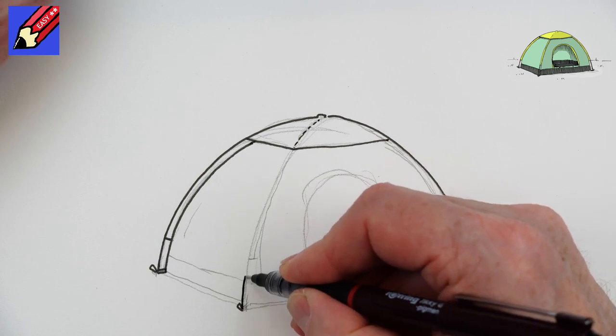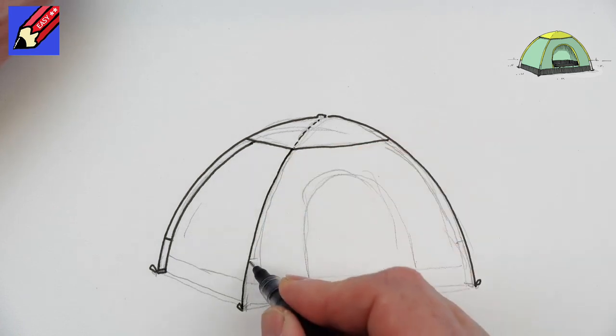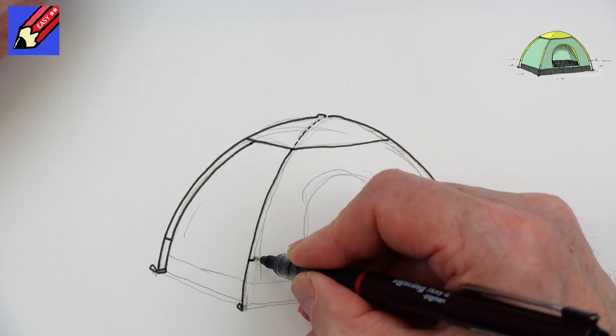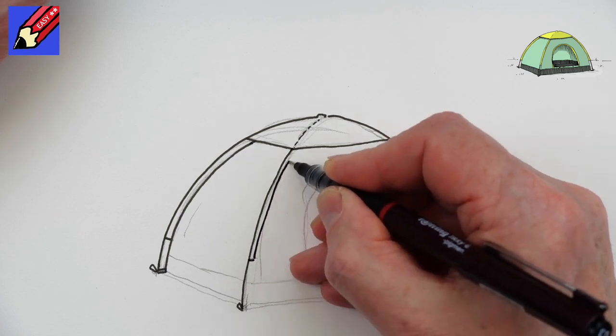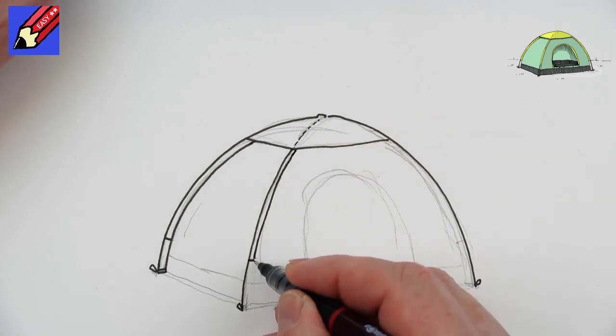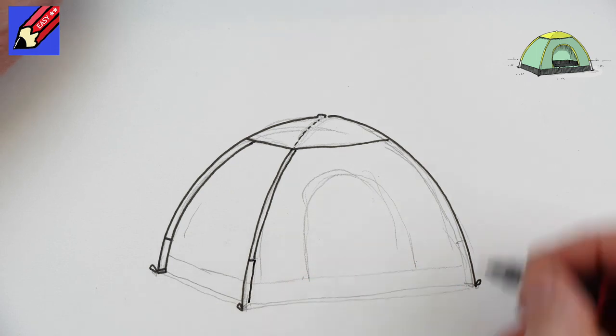We can do the same here like that. We've got this little bit here. This is like a sleeve stitched onto the edge of the tent. I'm just going to come down to there.